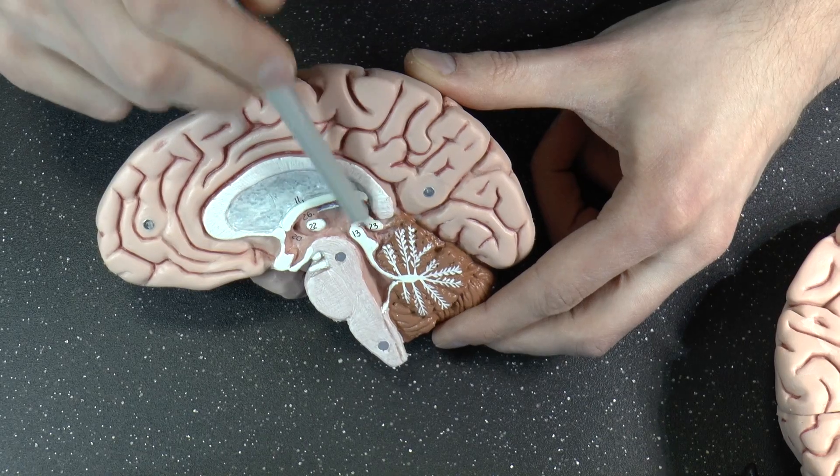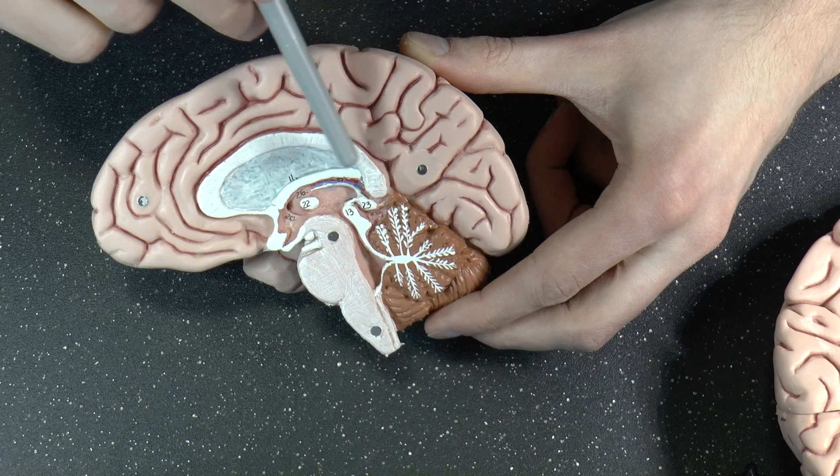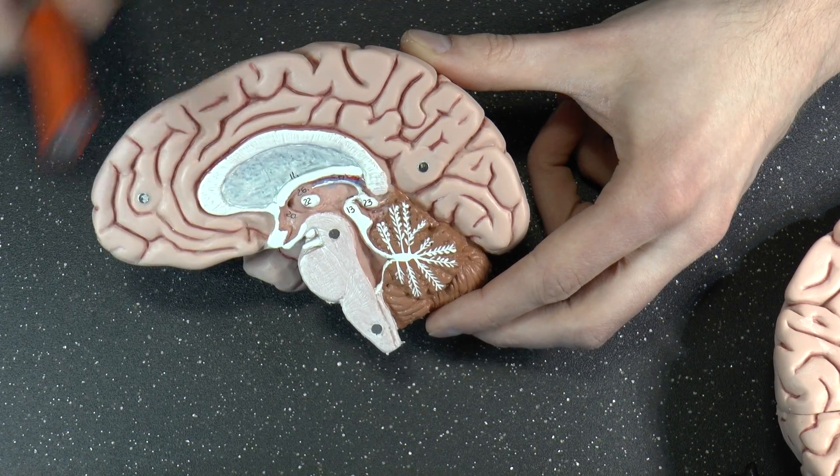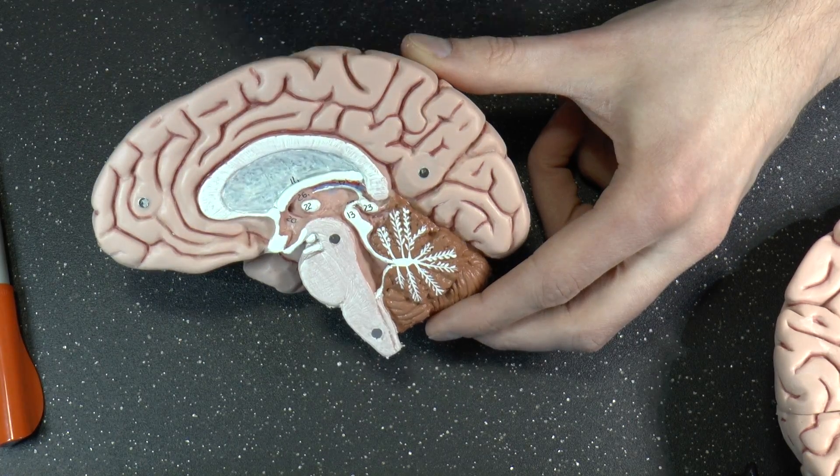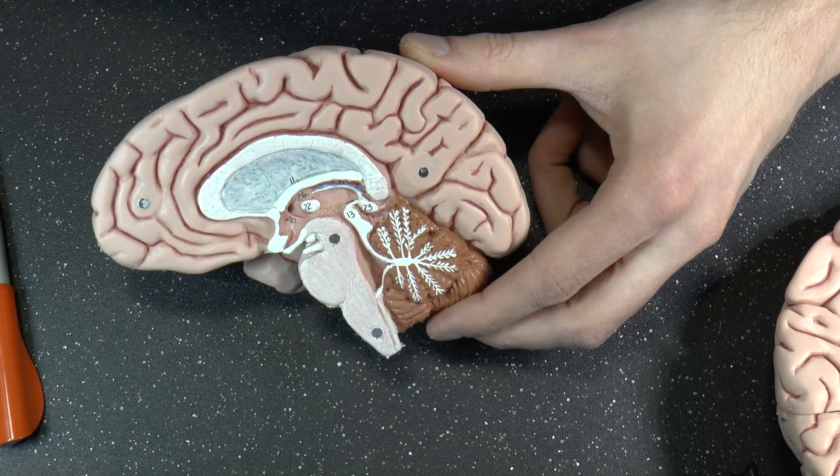That's about what I'm pointing at. Right there. Then a habenular commissure somewhere above that. But let's stick to corpus callosum, anterior, posterior commissures. Three structures that allow the two hemispheres of the brain to communicate. Wasn't that cool? That's cool. See you tomorrow.